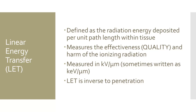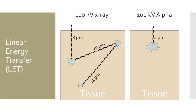Another thing to note about LET is that it is inversely proportional to penetration. The linear energy transfer measurement is the linear distance the energy has traveled within the tissue, and depending on the type of ionizing radiation, that energy will travel further. In the example on the left, the 100 kilovolts of X-ray energy traveled 8 microns into the tissue where it interacted with an atom and was scattered, then traveled another 10 microns into the tissue before interacting with yet another atom.